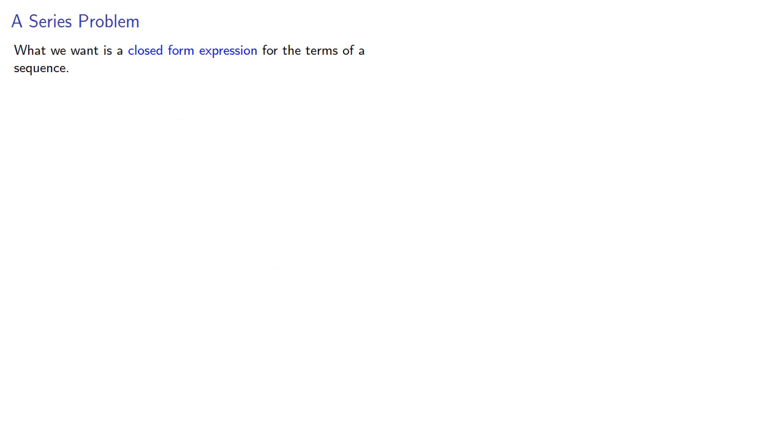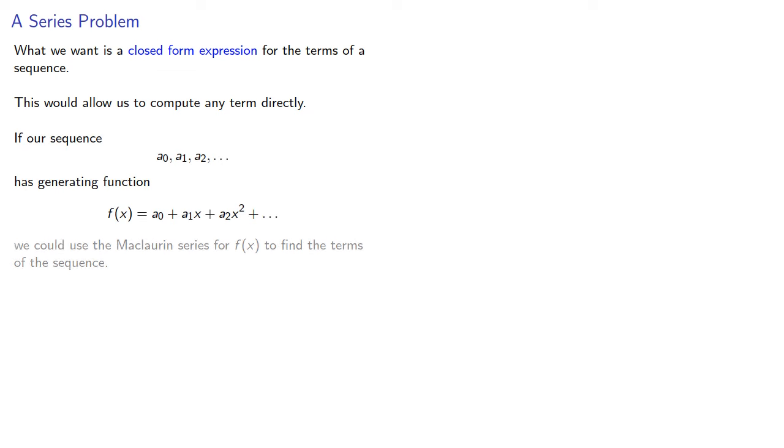What we want is a closed-form expression for the terms of a sequence. This would allow us to compute any term directly. If our sequence has a generating function, we could use the Maclaurin series for f to find the terms of the sequence. So if we assume a power series expansion for f of x, then our coefficients can be found.